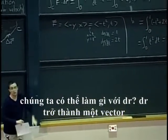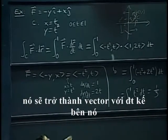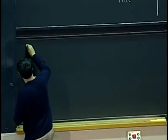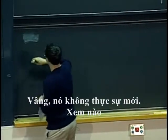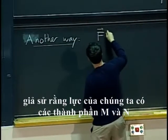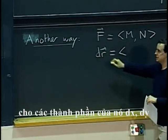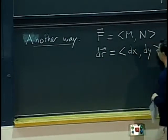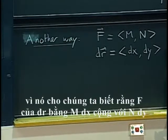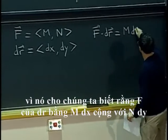What can we do directly with dr? When I replace it by dr/dt times dt, it becomes a vector with a dt next to it. Let's say our force has components M and N. We can write symbolically that vector dr stands for a vector whose components are dx and dy. As a notation it's pretty useful because it tells us that f dot dr equals M dx plus N dy.